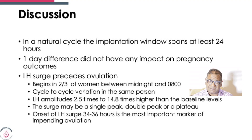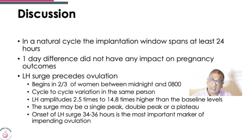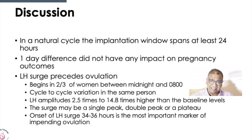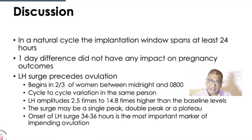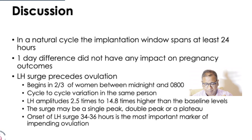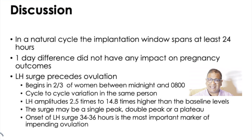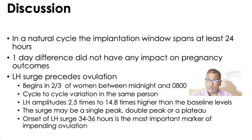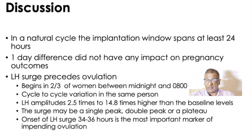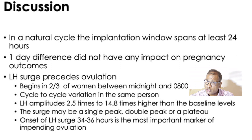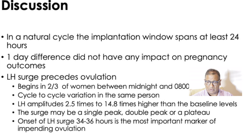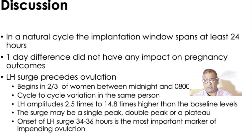Regarding the LH surge: in almost two-thirds of women, it occurs between midnight and 8 a.m. in the morning. Cycle-to-cycle variation does occur, and the amplitudes of LH go between 2.5 times to 14.8 times higher than baseline. It's not just one peak — you could have one peak, two peaks, or a plateau of LH. The best marker of ovulation is an increase in the LH surge between 34 to 36 hours.